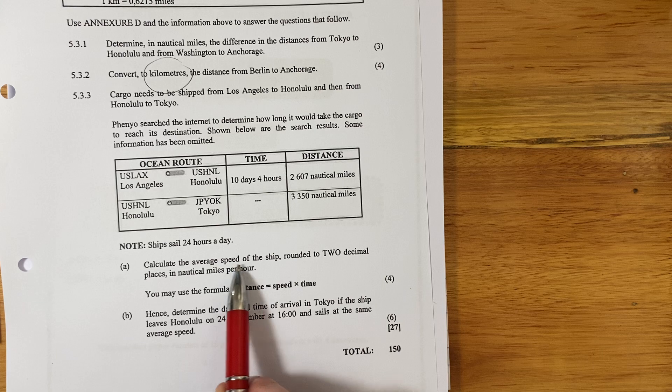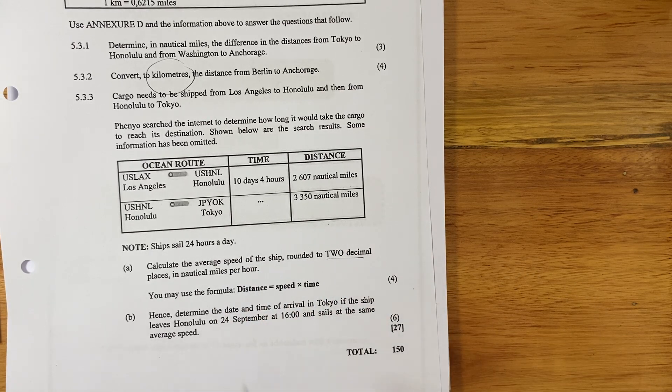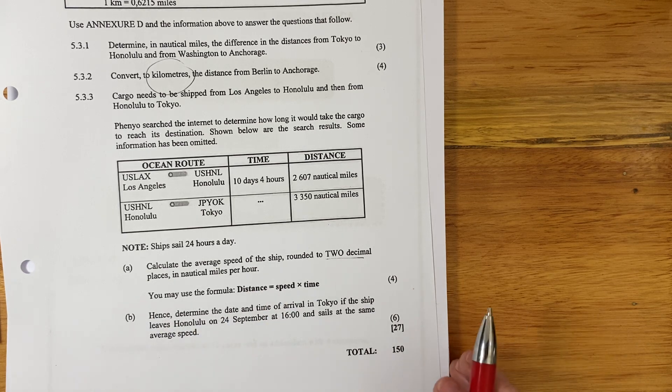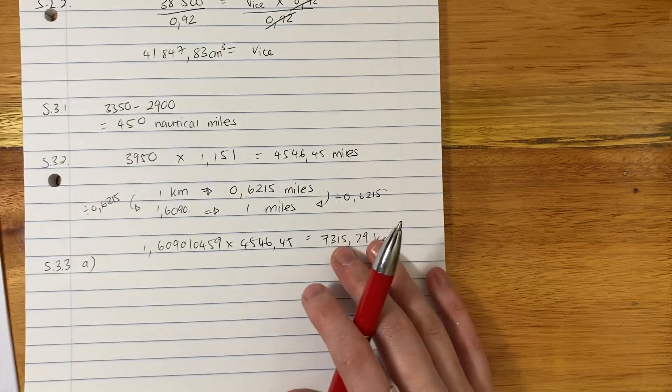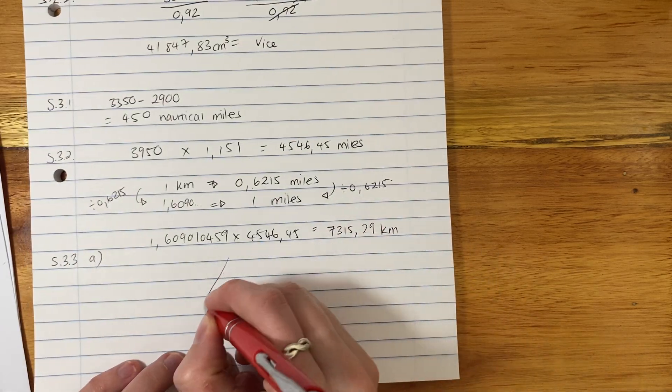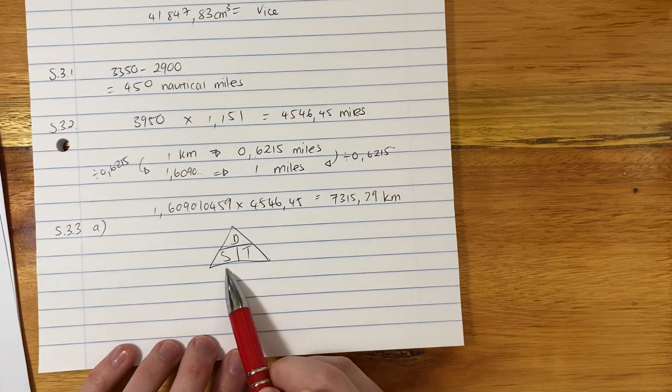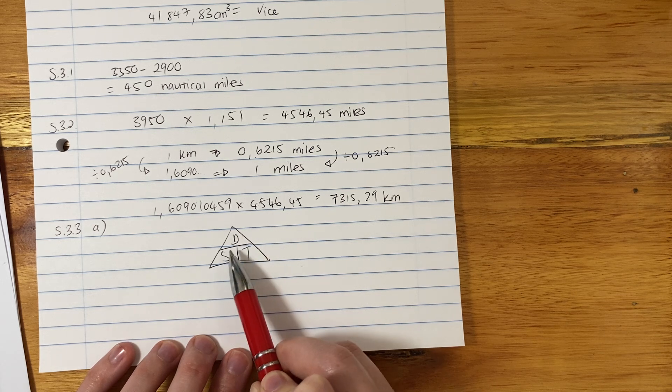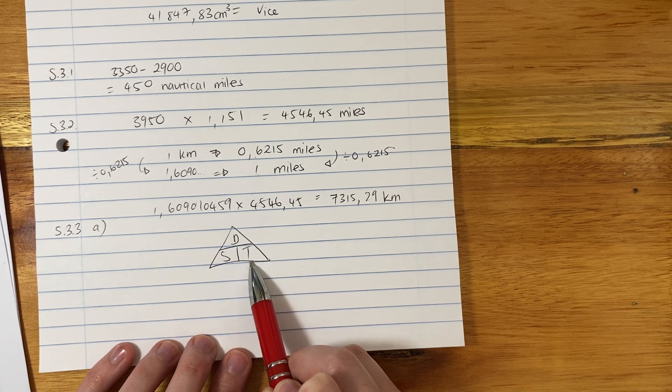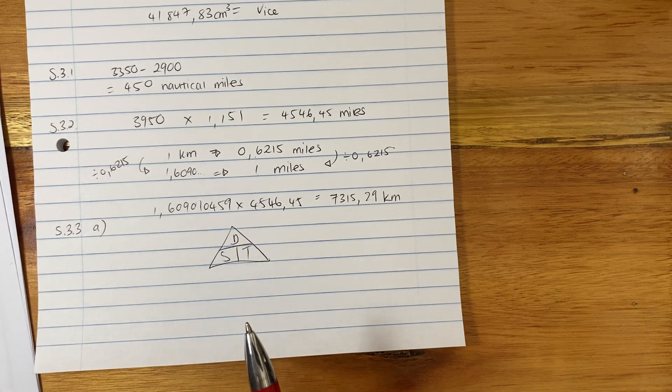A. Calculate the average speed of the ship, rounded to two decimal places in nautical miles per hour. So we've got distance equals speed times time. We are working out speed, so we know we're going to have to change it up. But you should know this little triangle, which really helps us. Speed equals distance over time. Time equals distance over speed. And distance equals speed times time. If you don't know that, I have just taught you something. Make sure that you know this triangle. Very important.